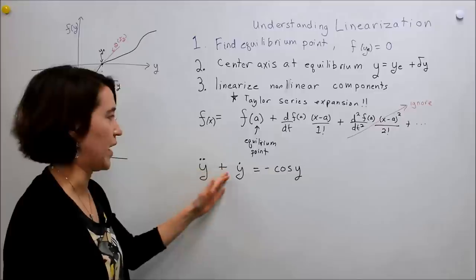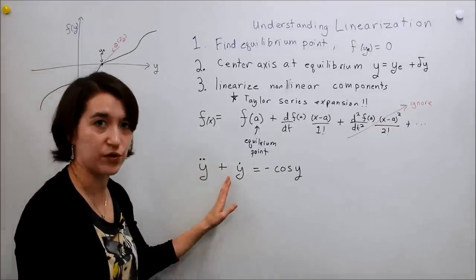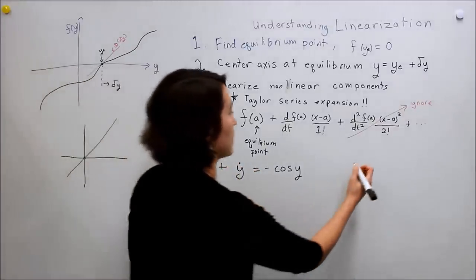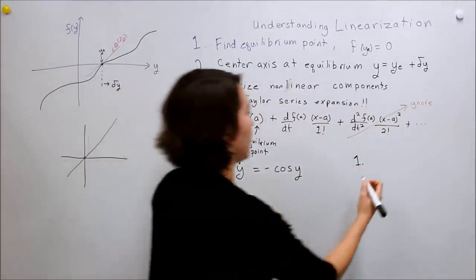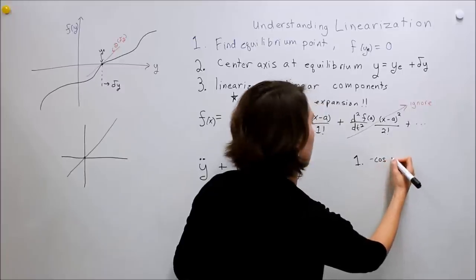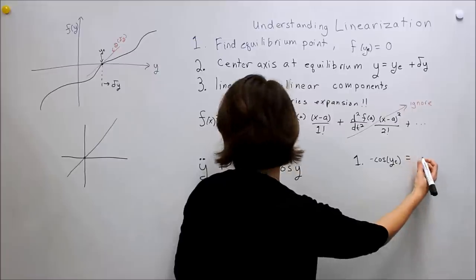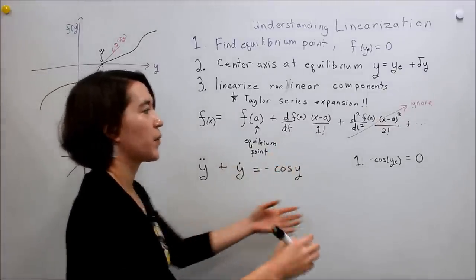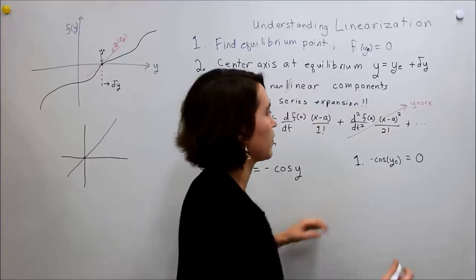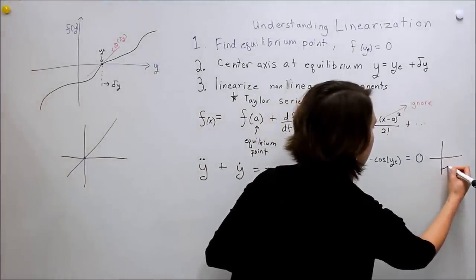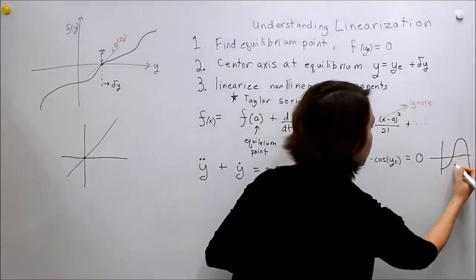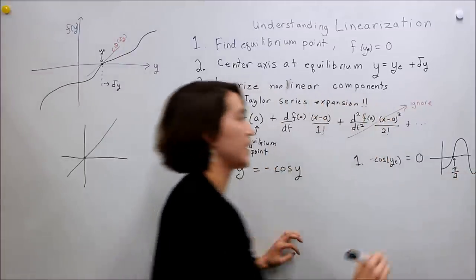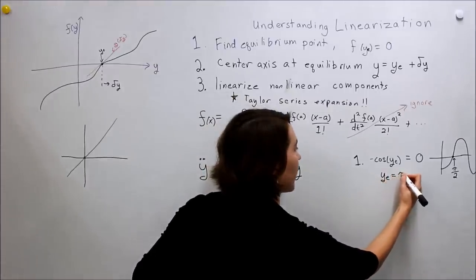If there's an input we also assume that's zero. In this case it's a single variable, so we just assume these two are zero, which means for step one we get: negative cosine of y_e equals zero. Thinking back to what a negative cosine graph looks like, there are actually multiple equilibrium points. We're going to assume the equilibrium at pi over two, so y_e = π/2.